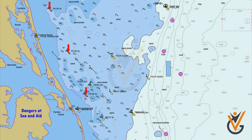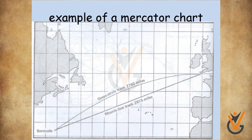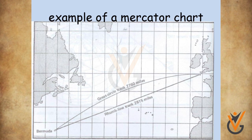Nautical charts are available in paper form as well as electronic form, known as ECDIS. Mercator projection-based nautical charts, known as Mercator charts, are widely used by mariners.